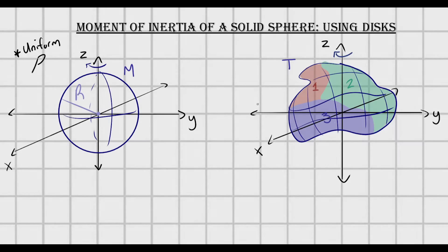Hello there. So in this video, I want to calculate the moment of inertia of a solid sphere. The sphere is going to have a uniform mass density, has some mass M and some radius R, and it has an axis of rotation passing through its center.